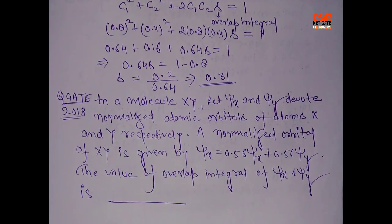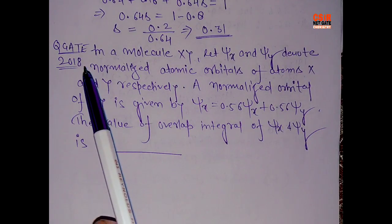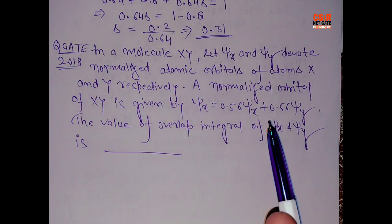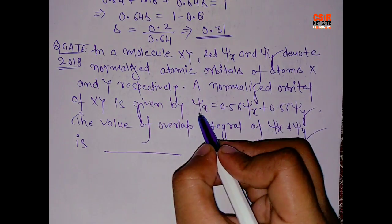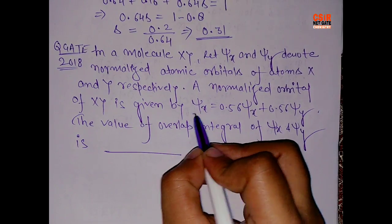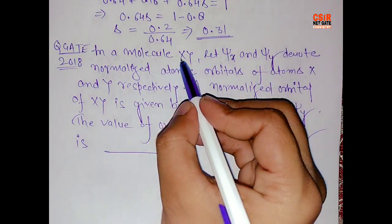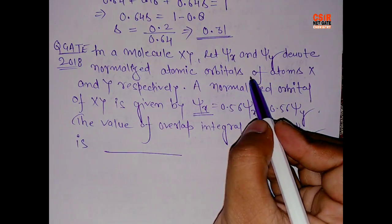Now come to the very recently came question which was asked in GATE 2018. It is on the same pattern as you can see. We have a combined wave function. We have a wave function here for this XY. Let psi X and psi Y denote the normalized atomic orbital of atom X and Y.